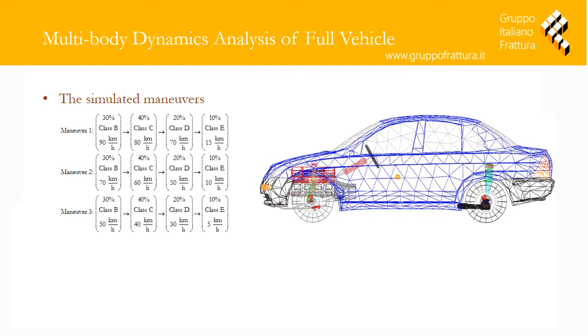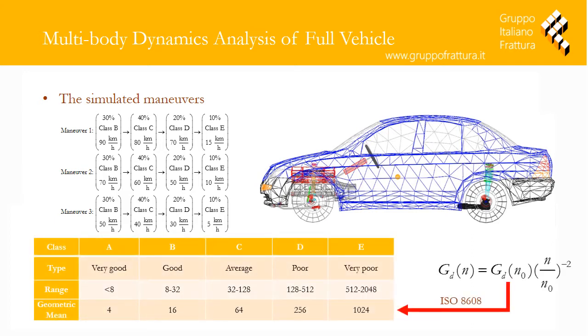The first step in durability analysis is to calculate the loadings. The multi-body dynamics model of the vehicle is driven on three different road combinations. These roads are modeled using roughness PSDs provided by ISO 8608 standard. The suspension and body interface loads are calculated and used for stress analysis.